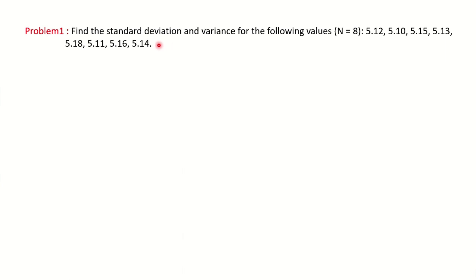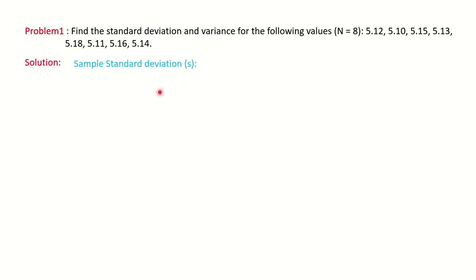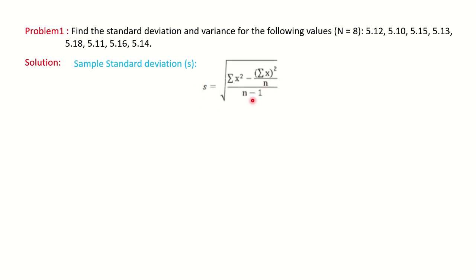In this question, they have given you the data and are asking you to calculate the standard deviation and variance. The total number of data points is eight and the measurements are given. We need to calculate standard deviation and variance. First, we will see the formula of standard deviation — note it down in your notebook as the easiest and correct way to solve standard deviation.